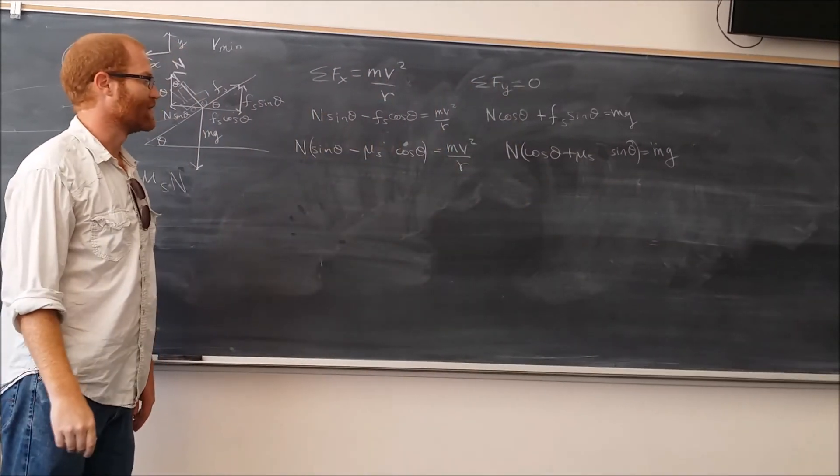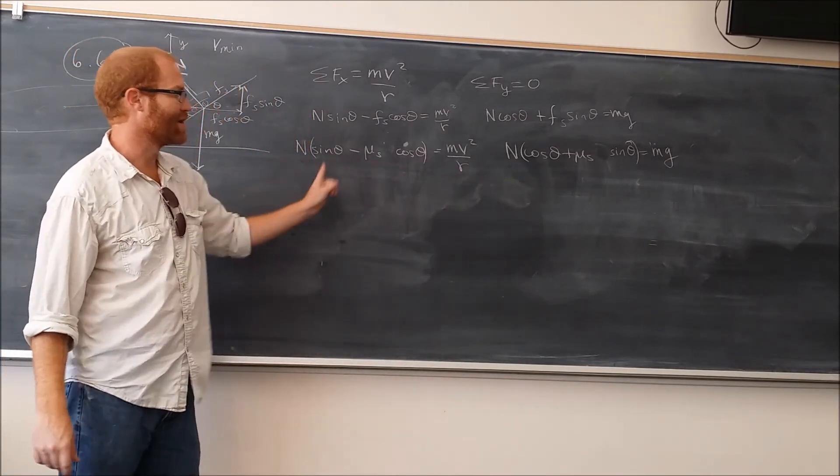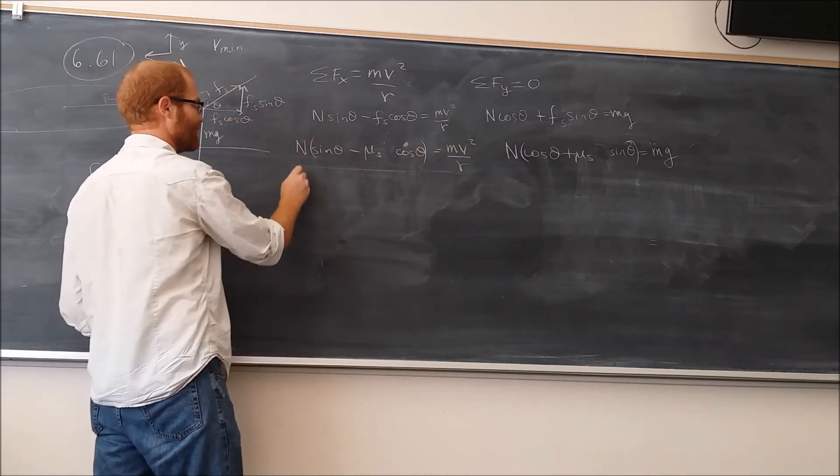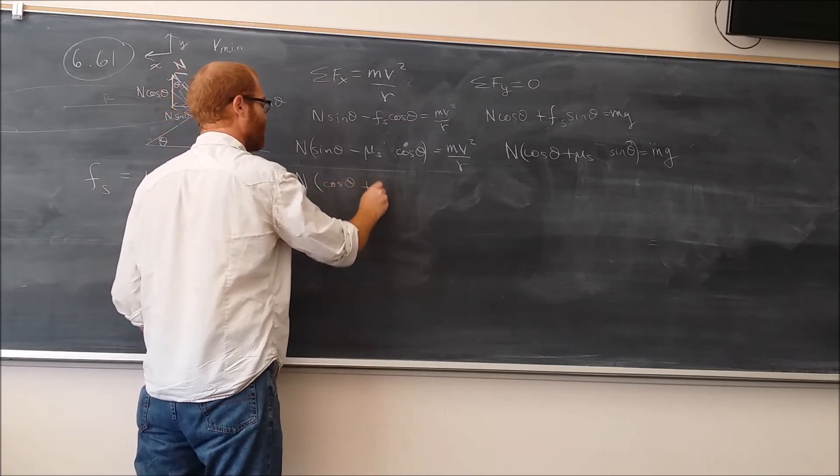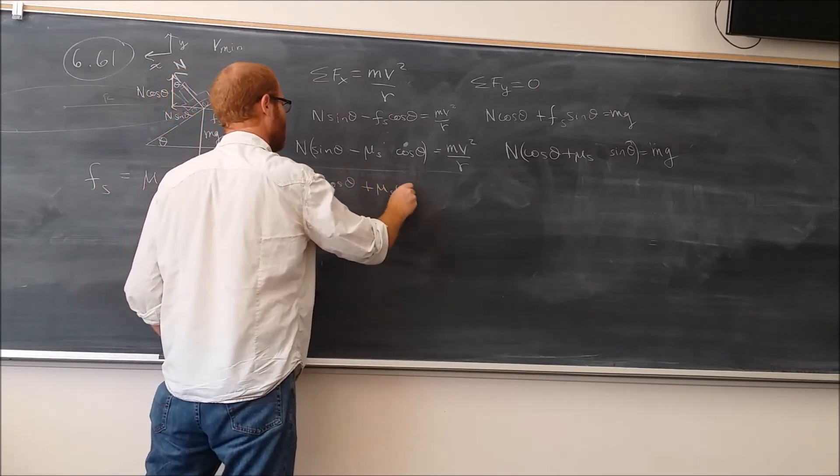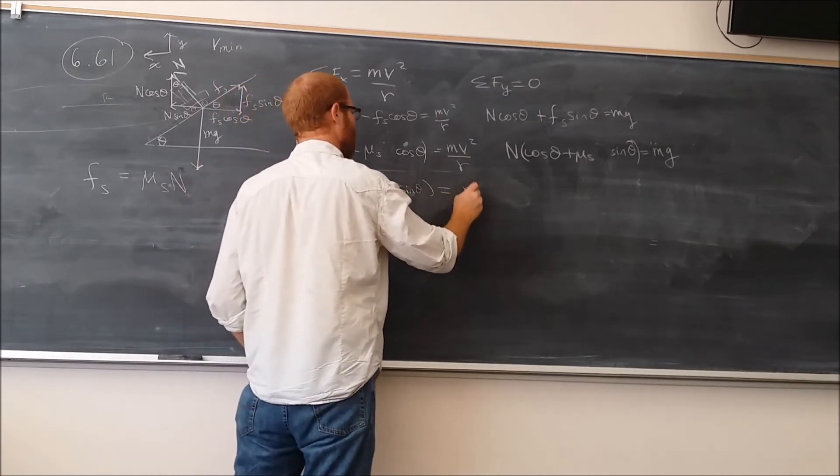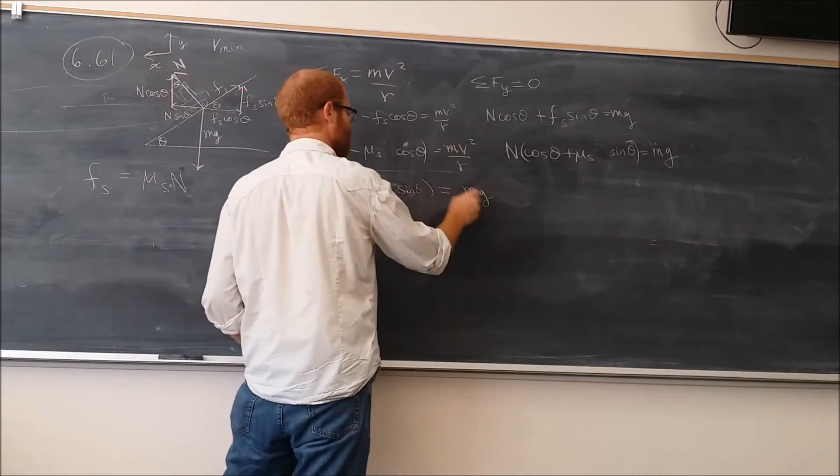And then, I think the easiest way to do this is that you can either solve this one for N, plug it in here, or we can just divide that equation by this equation. So, we're going to divide that equation by this one. And the normal forces will cancel. N will cancel.